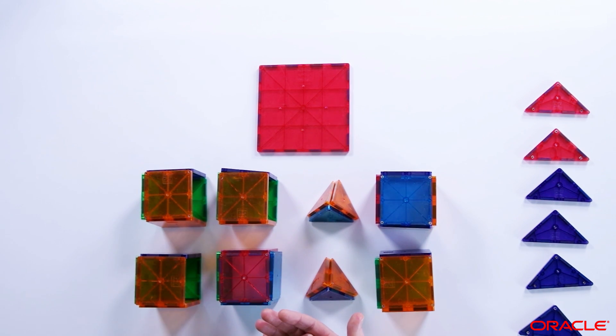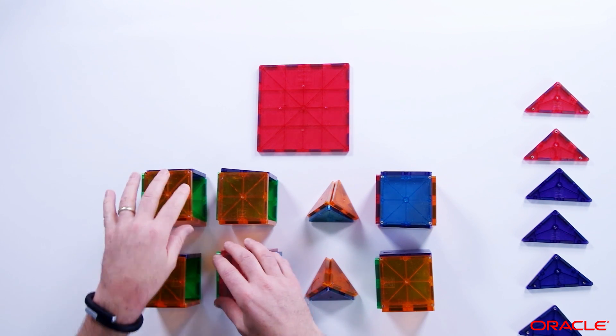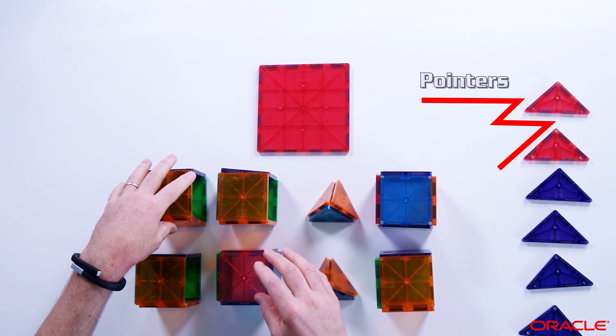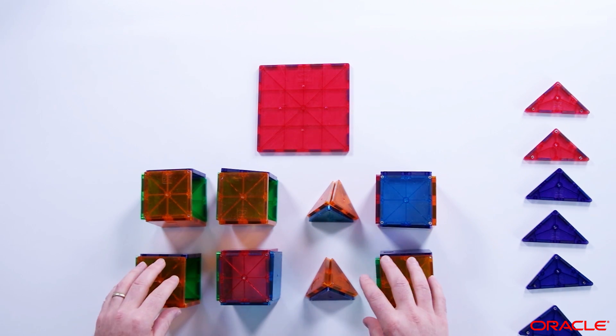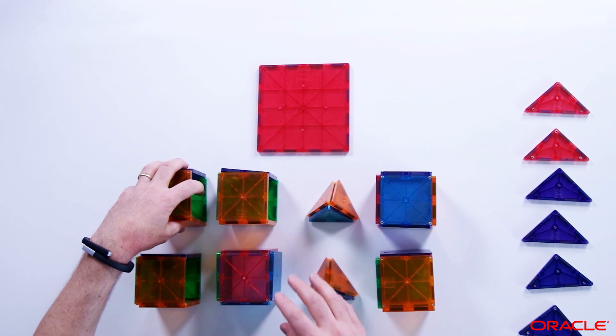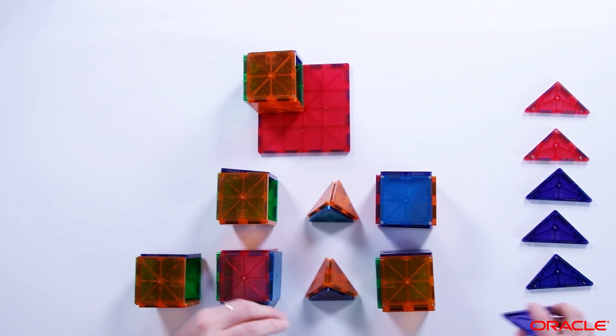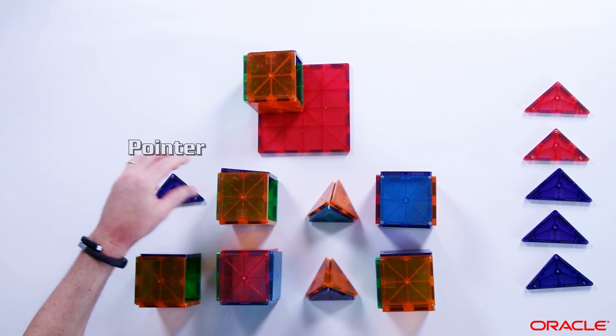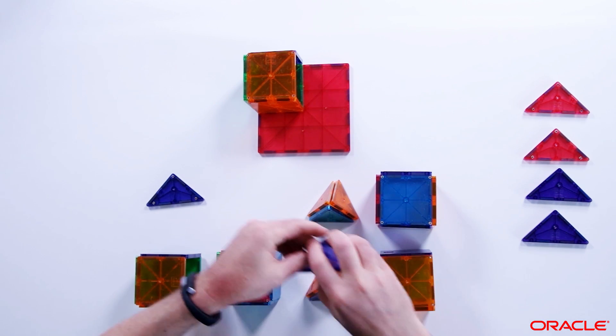Advanced Compression deduplicates repeating values into the header of the block and replaces those values with pointers. For example, you can see these four cubes here, these four column values, have the same color, the same structure. Advanced Compression will put one of them into the header, replace that with a pointer, and remove the others and replace all of them with pointers as well.